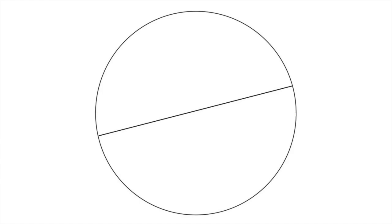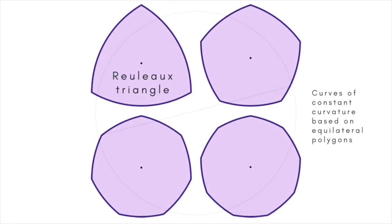At first glance, you might think the circle is the only shape that can have the same width across in any direction. But no, every regular polygon with an odd number of sides gives rise to a curve of constant width.